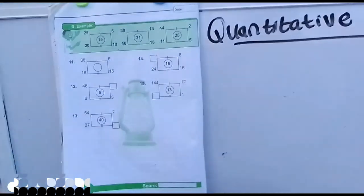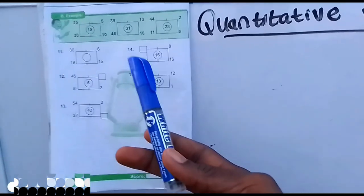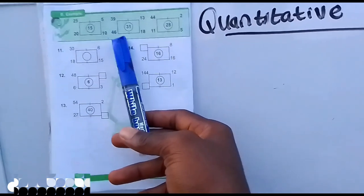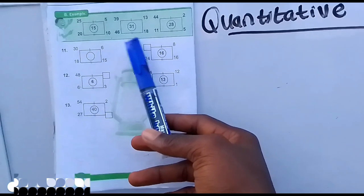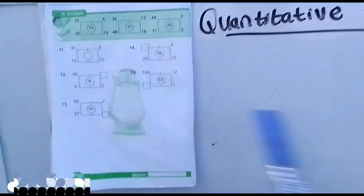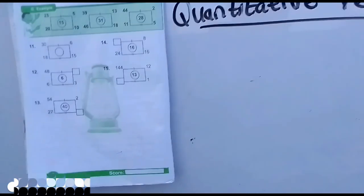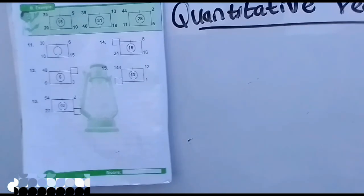I told you earlier in my previous video that whenever you have quantitative reasoning, what you think first is the shape. What is the shape trying to tell you? The shape here is trying to tell us that there is relationship between these two and relationship between these two.